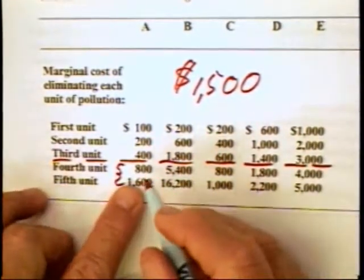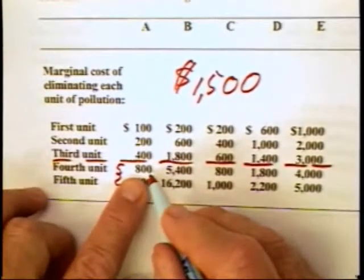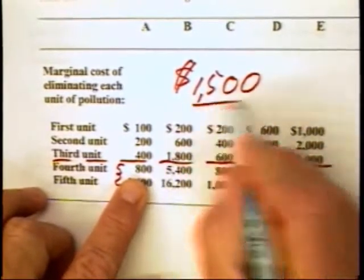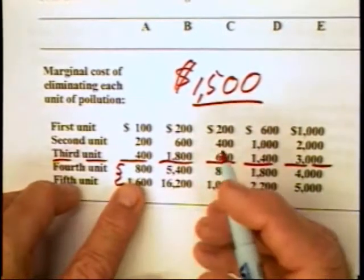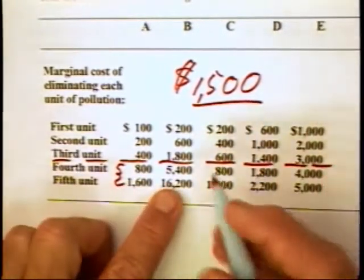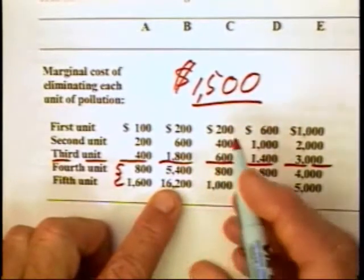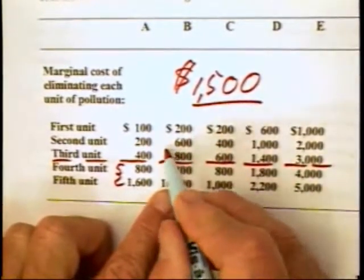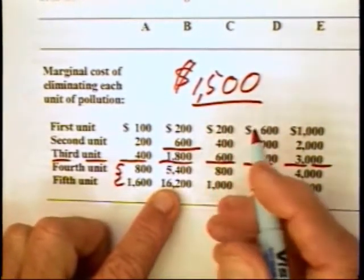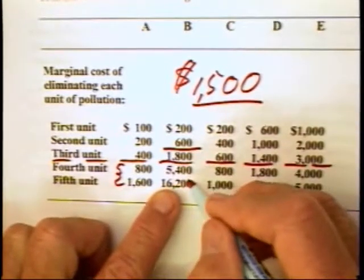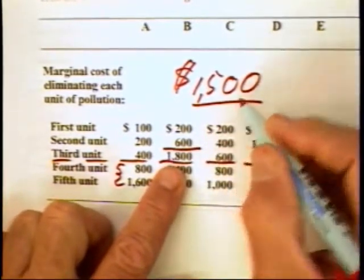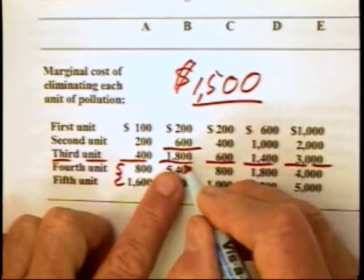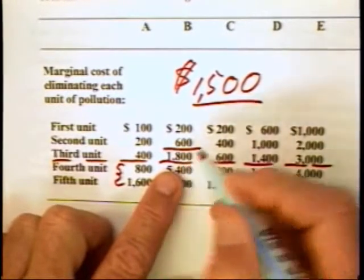Firm A would prefer to sell one of its pollution rights for $1,500 and then use $800 to clean up that fourth unit. Firm B would prefer to buy one of the pollution rights to get a total of three, because it would prefer to incur a cost of $1,500 rather than the $1,800 pollution abatement cost.